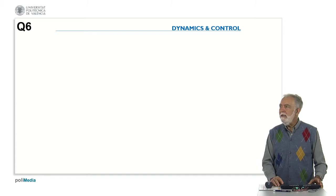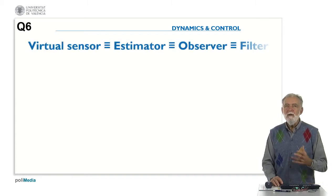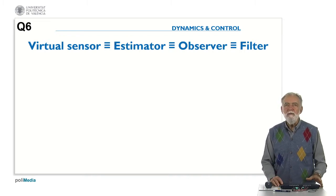So, in this next question, number 6, we are going to deal with the concept of a virtual sensor, that we saw is equivalent to estimator, observer, or filter.